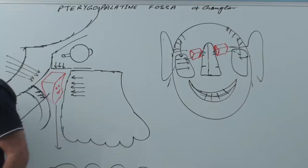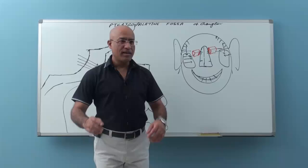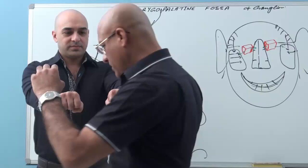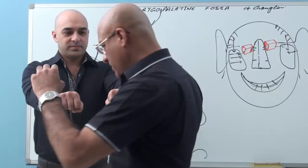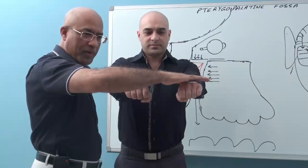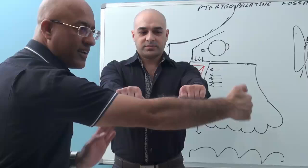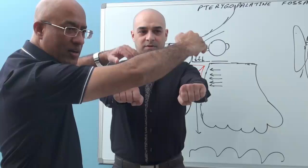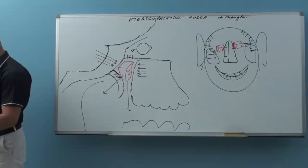A student demonstrates the two pterygopalatine fossae. This is the right pterygopalatine fossa, this is the left. At the top is the orbit, in front is the maxilla, inside is the nasal cavity, outside is the infratemporal fossa, and behind and above is the middle cranial fossa. Now we will talk about the bones — the bony boundaries.